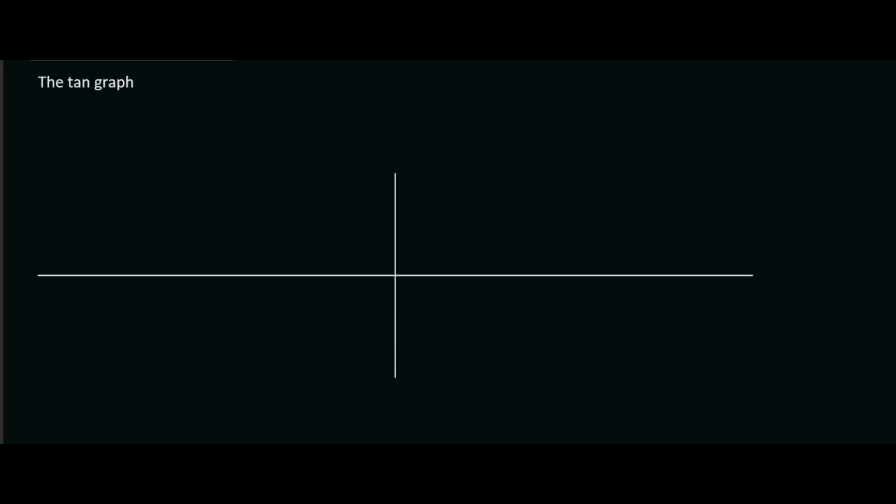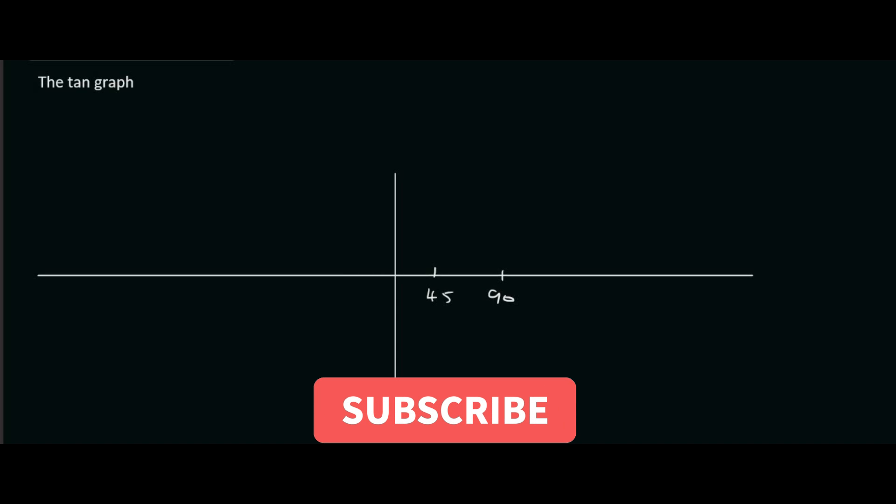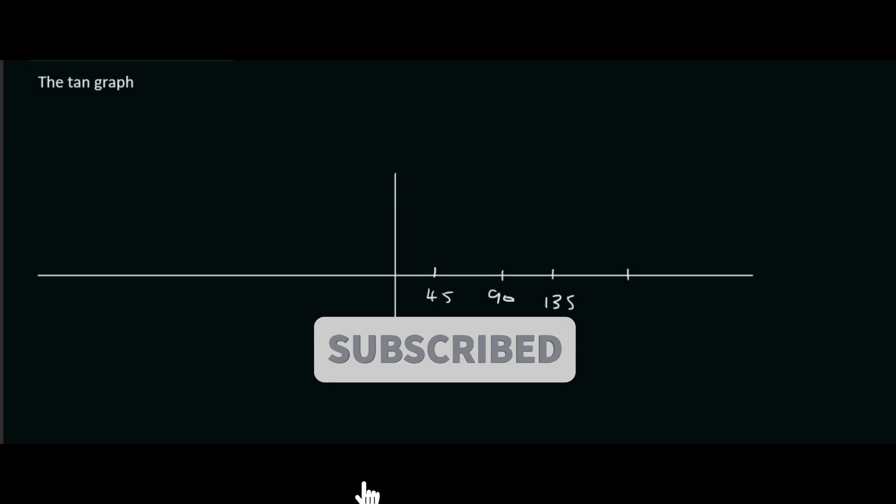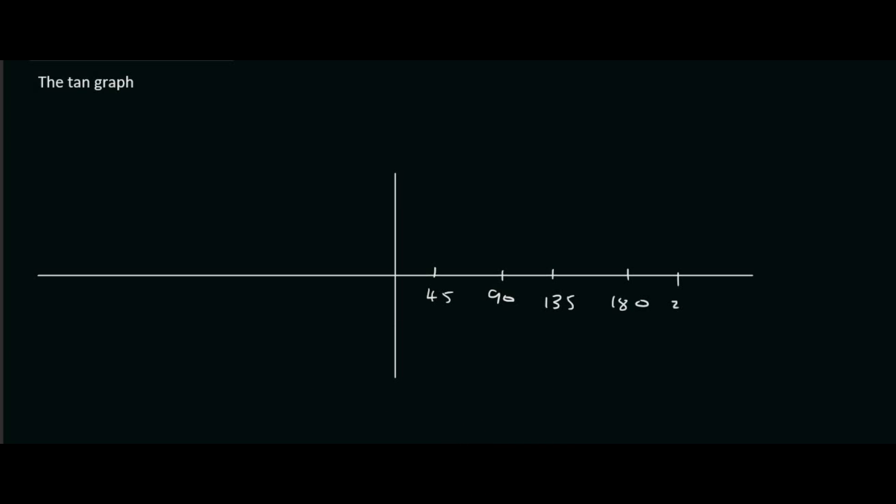Now with the tan graph you're typically going to use steps of 45 degrees and not 90 degrees because in the previous lessons we used 90 degrees for each of our steps. I've run out of space a bit here so I'm just going to extend this 315 and 360.